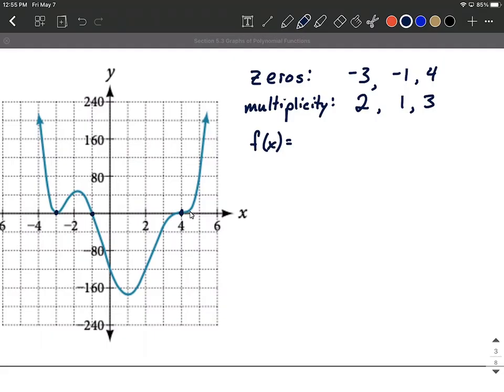All right, so after we have zeros and multiplicities, let's put this together and create factors for our function. Whenever you're doing this, remember that it's always x minus whatever the zero is for a factor. So in creating these, it's going to be x minus a negative three, or x plus three, a little bit cleaner.